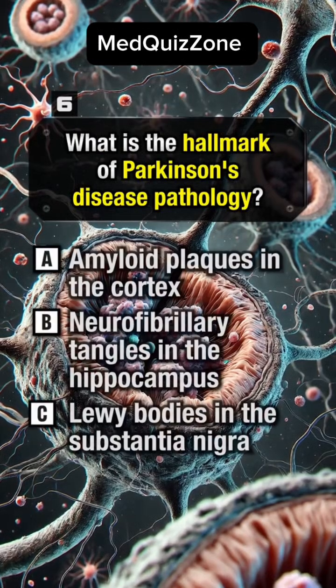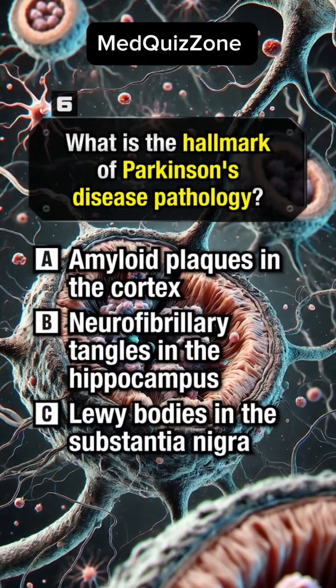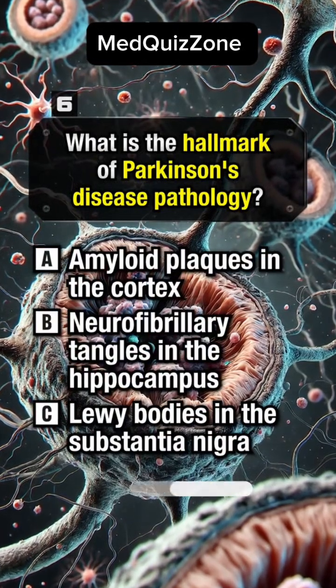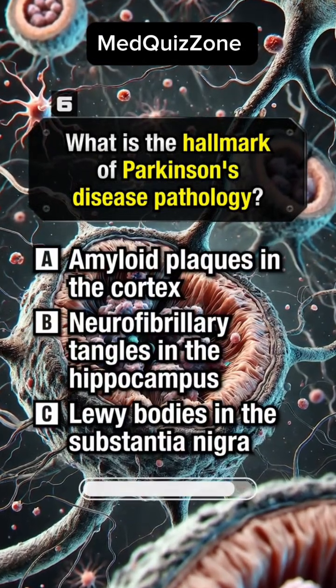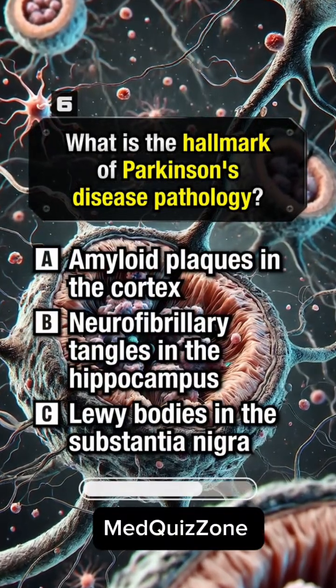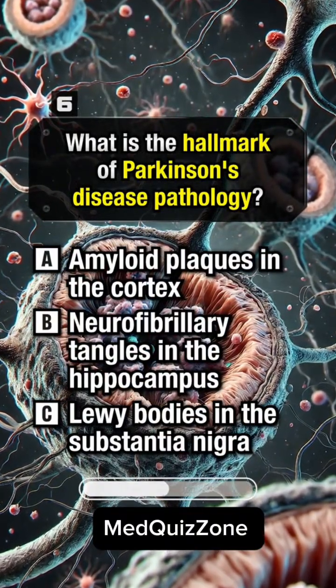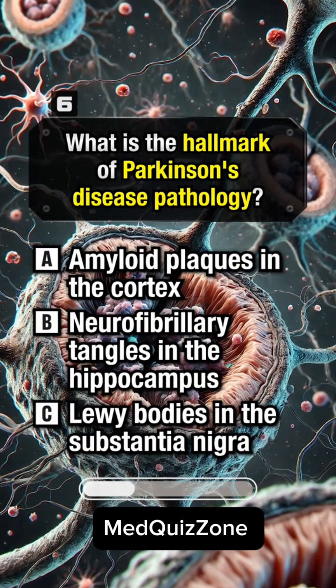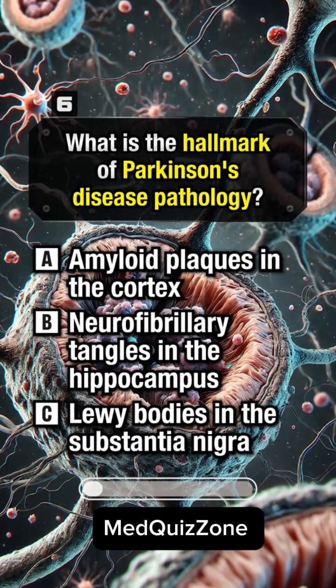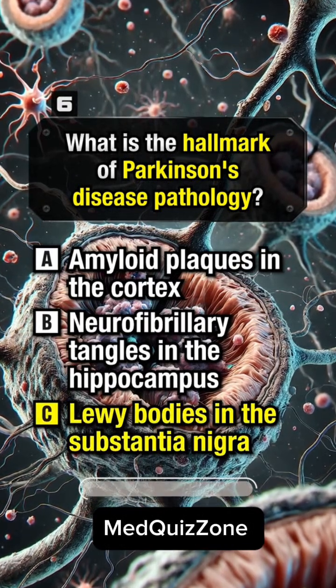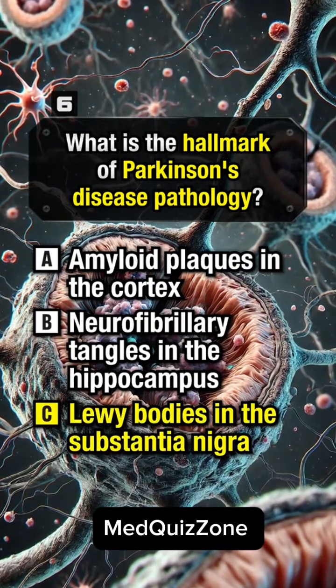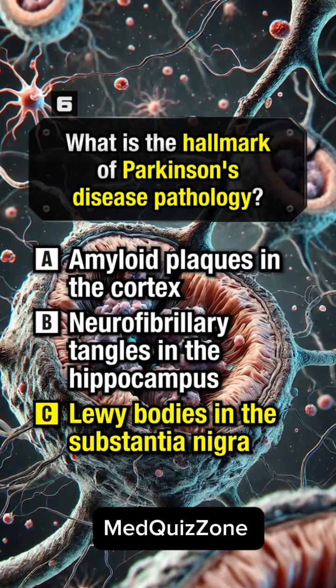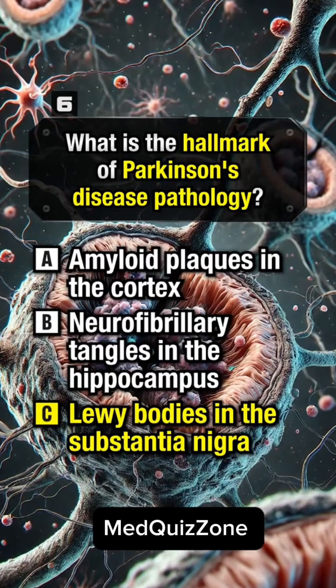What is the hallmark of Parkinson's disease pathology? Answer C: Lewy bodies in the substantia nigra.